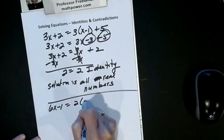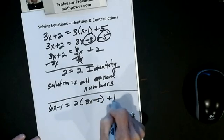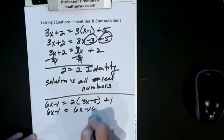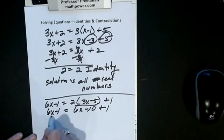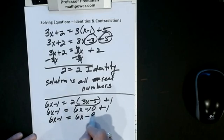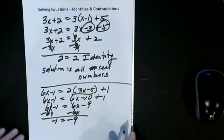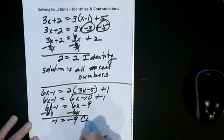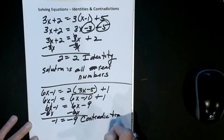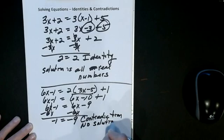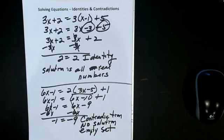Last one. Say I have 6x minus 1 equals 2 times the quantity 3x minus 5, plus 1. Using the distributive property gives 6x minus 1 equals 6x minus 10 plus 1, which simplifies to 6x minus 1 equals 6x minus 9. I subtract 6x from both sides — they cancel — and I get negative 1 equals negative 9. That's an impossible situation, so it's called a contradiction. A contradiction means there is no solution, or in set theory, an empty set.